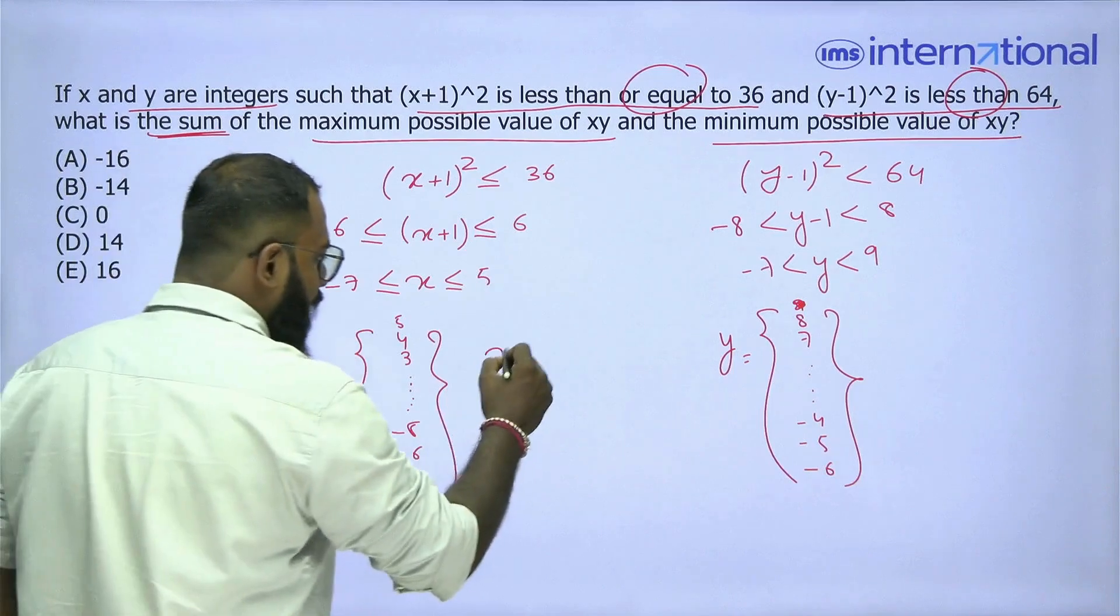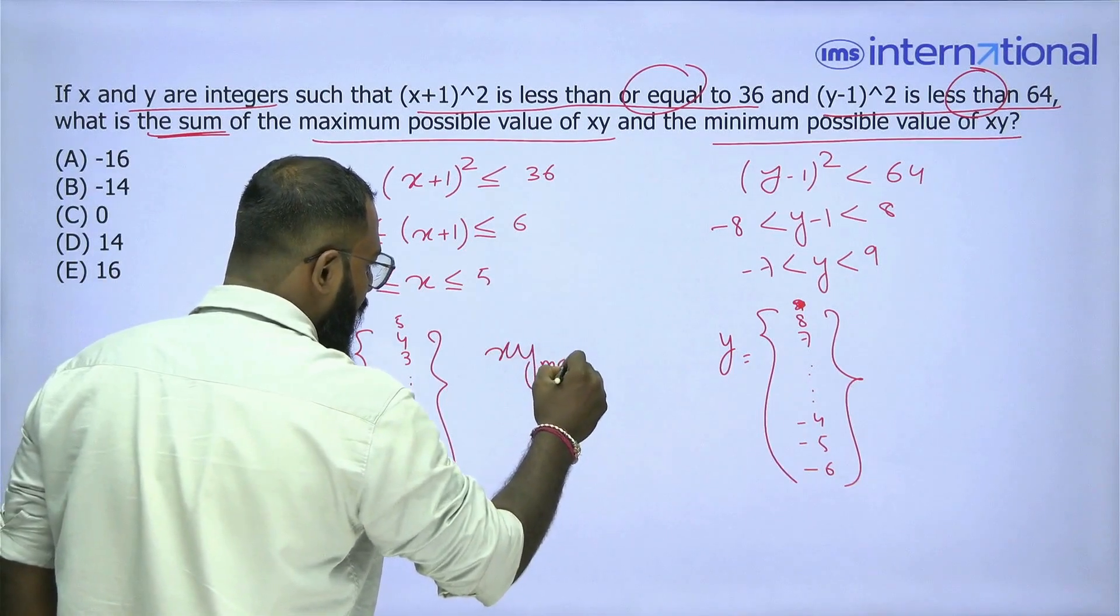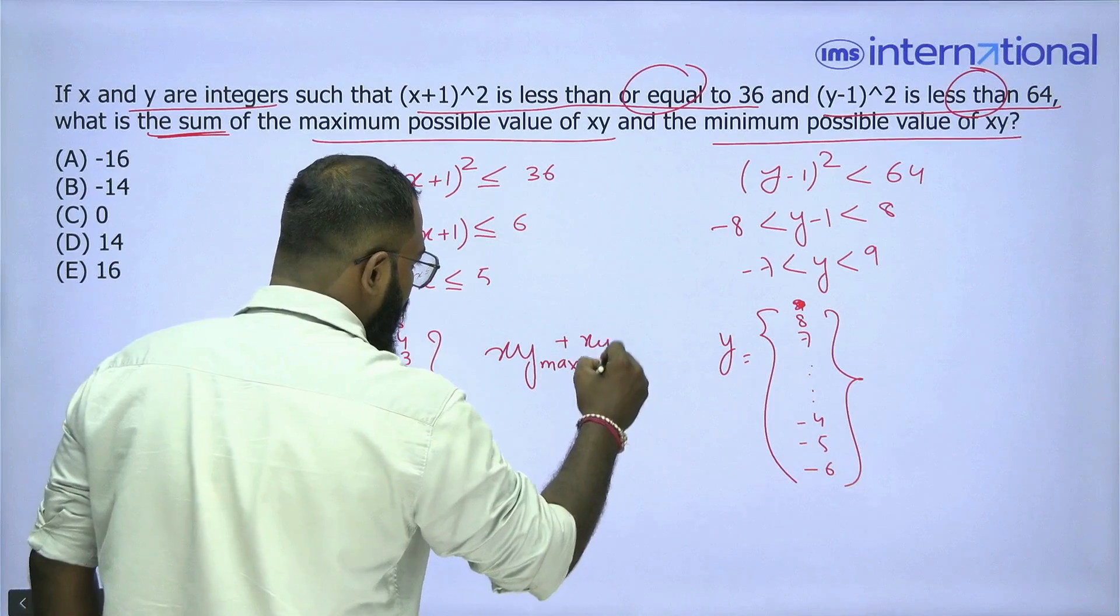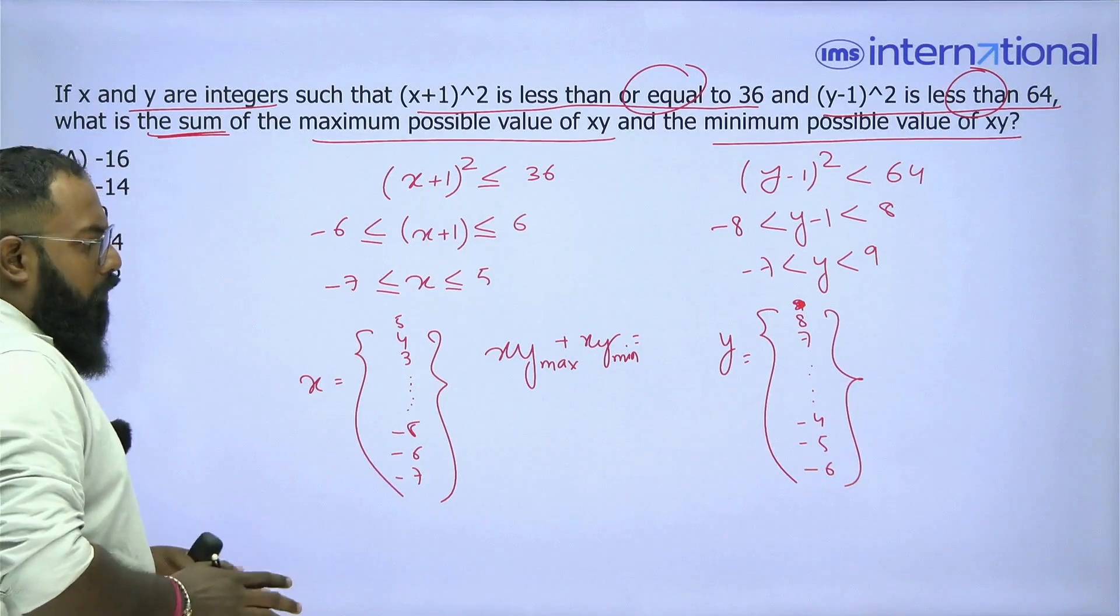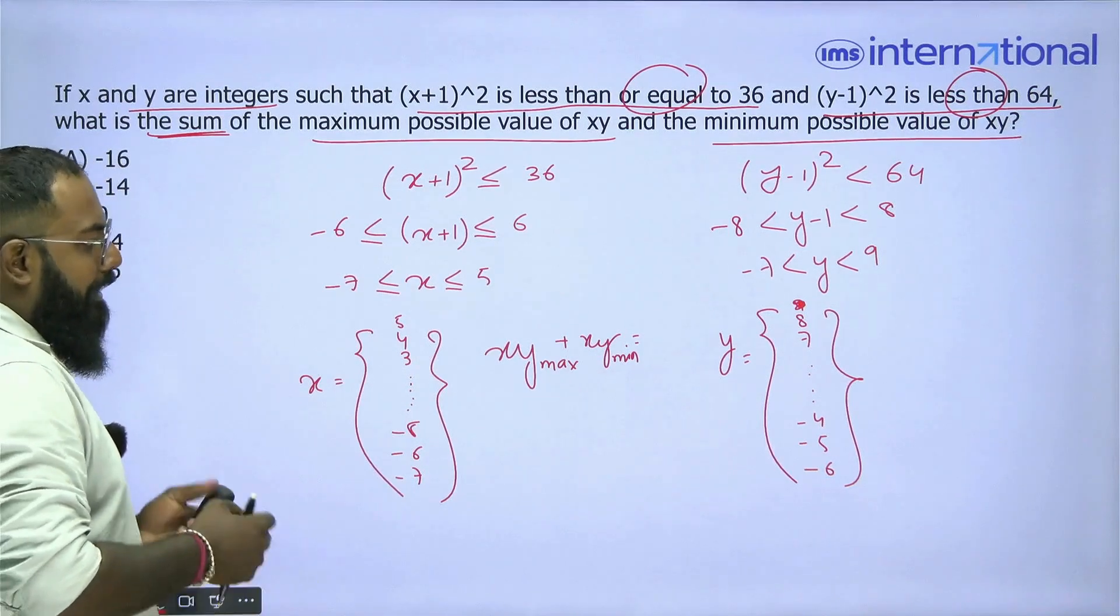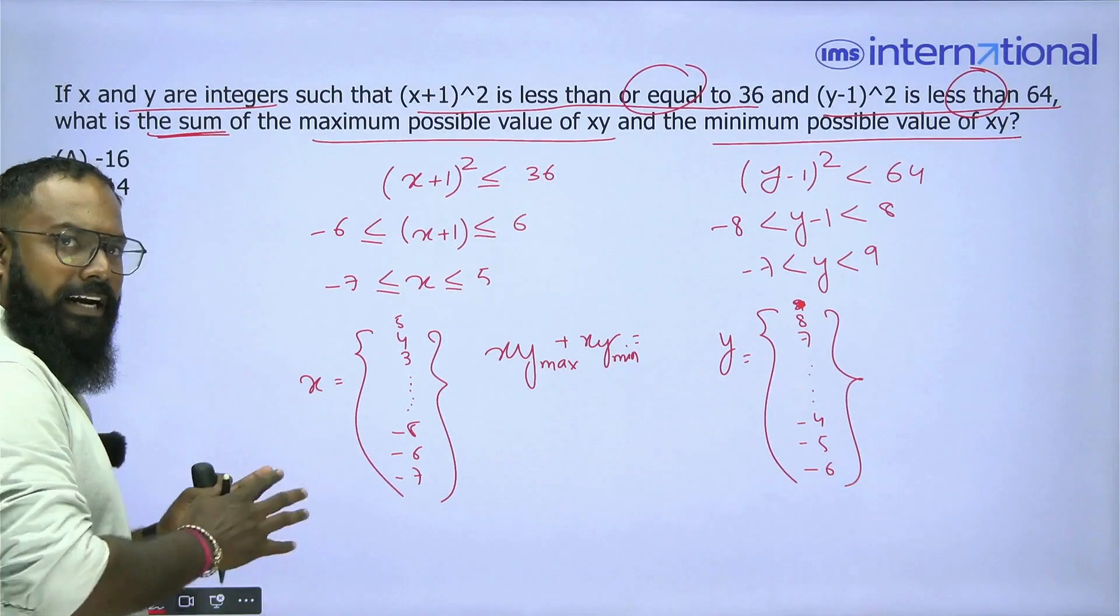Now I have to find xy max and xy min, and I have to find the summation of these two values. Now, to get xy max or xy min, I can get these two values if I multiply the extremes.